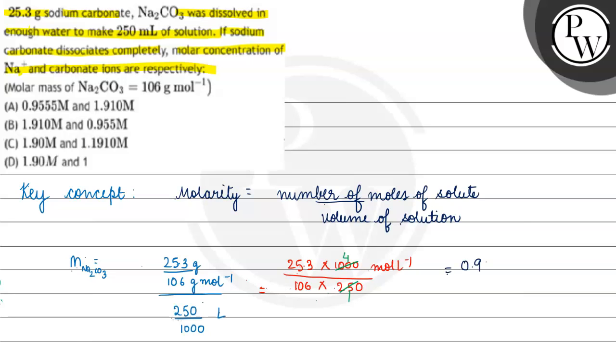Solving that gives 0.955 molar. So the molarity of Na₂CO₃ is 0.955 M.